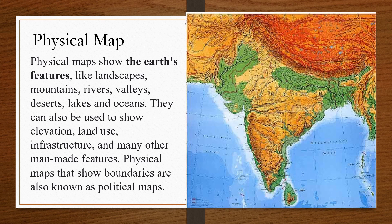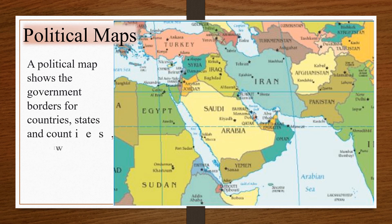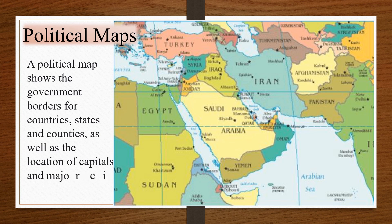Physical maps that show boundaries are also known as political maps. The definition of a political map: it shows the government borders of countries, states, and counties, as well as the location of capitals and major cities.